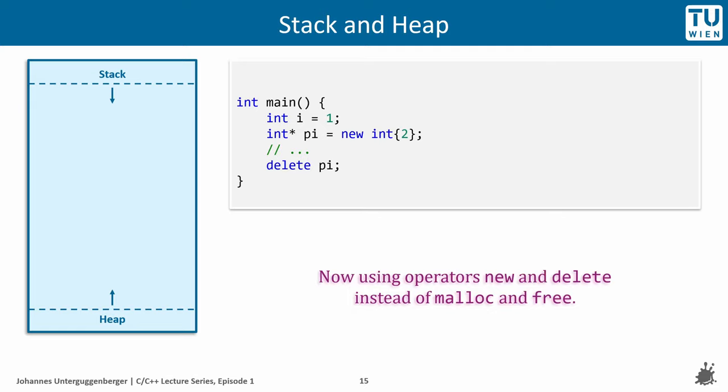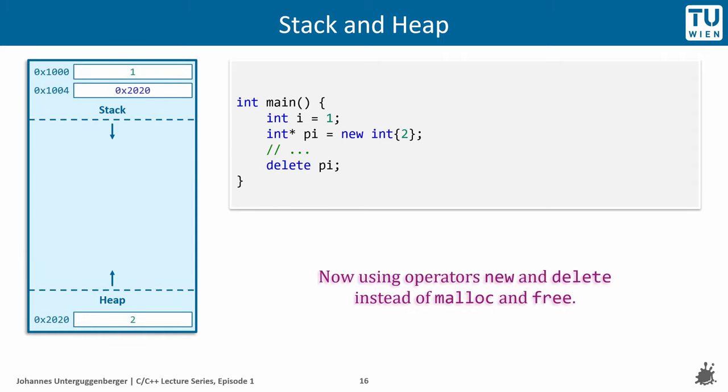Let's return to the heap allocation example once again. While malloc and free would be the way to go for a puristic C approach, there are operators new and delete, which can be used if C++ is an option. The main advantage of new and delete is that they are typesafe. On the slide, you see the same example just using new and delete instead of malloc and free. Their usage has the exact same effect as we have seen previously, just the code is better readable and more concise, because we can initialize the allocated heap memory with a value right away.